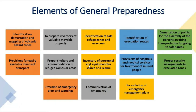General preparedness measures include: identification and demarcation of volcanic hazard zones; preparing an inventory of valuable property for evacuation; identification of safe refuge zones and evacuation routes; demarcation of assembly points for personnel awaiting transportation to safe zones. At governmental, NGO, and community levels this includes: provision of easily available means of transport, proper shelters and accommodation in refugee camps; inventory of personnel and equipment for search and rescue; provision of hospitals and medical services for treatment of injured people; proper security arrangements; provision of emergency alerts and warnings; communication systems; and formulation of a management plan.